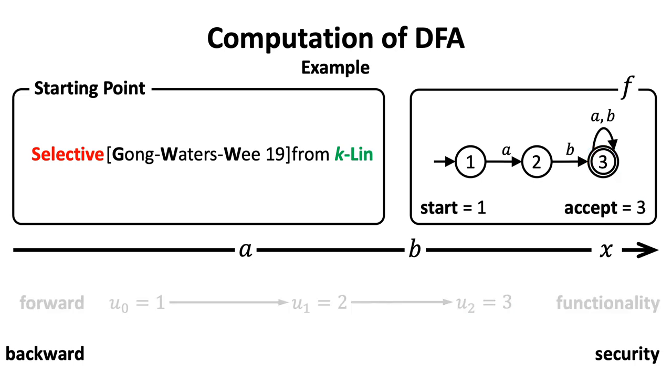The backward computation works analogously to the forward one, except that we do everything reversely. We start from the accept state instead of start state, and read the input from right to left. Also, we use transition function reversely.